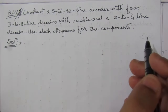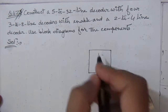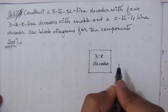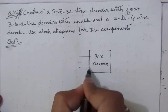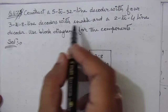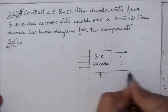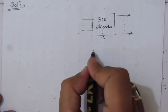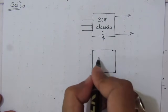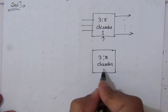Now let us draw the circuit. We will have 4 three-to-8 line decoders. The first 3-to-8 decoder has 3 input lines, 1 enable input, and 8 output lines — this is decoder number 1. The second 3-to-8 decoder also has 3 input lines, 1 enable input, and 8 output lines — this is decoder number 2.